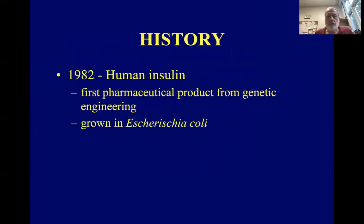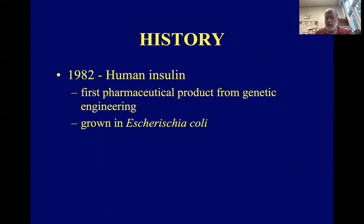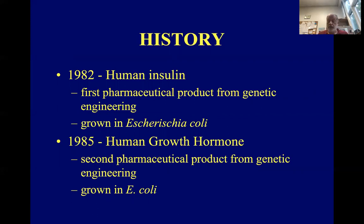The first commercially feasible example was in 1982. They took the human insulin gene and put it in E. coli, grew up the E. coli, and were able to produce human insulin. Before that, insulin was obtained from slaughterhouses from cattle and pigs. Then in 1985, the human growth hormone gene was done in a similar way — put in E. coli and grown in big vats to produce copious amounts of the human growth hormone molecule for medical use.